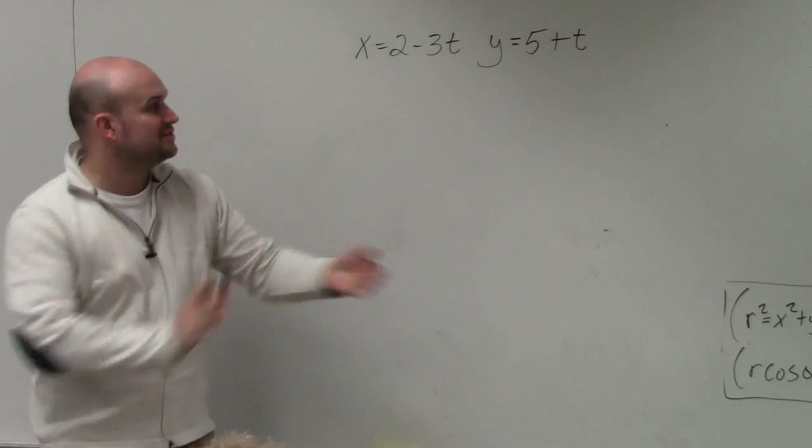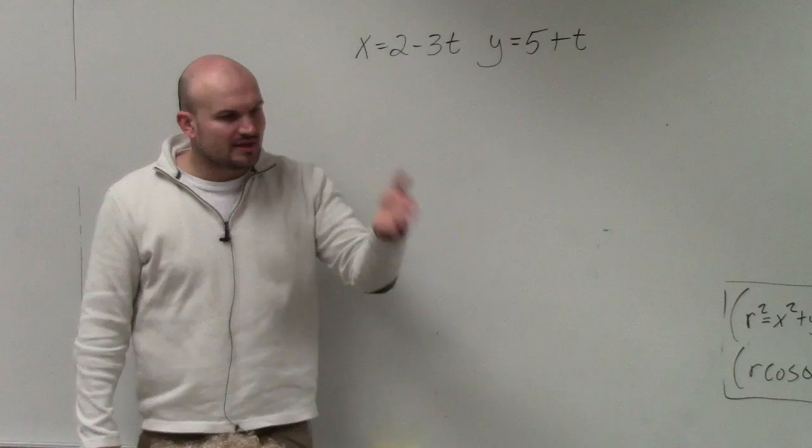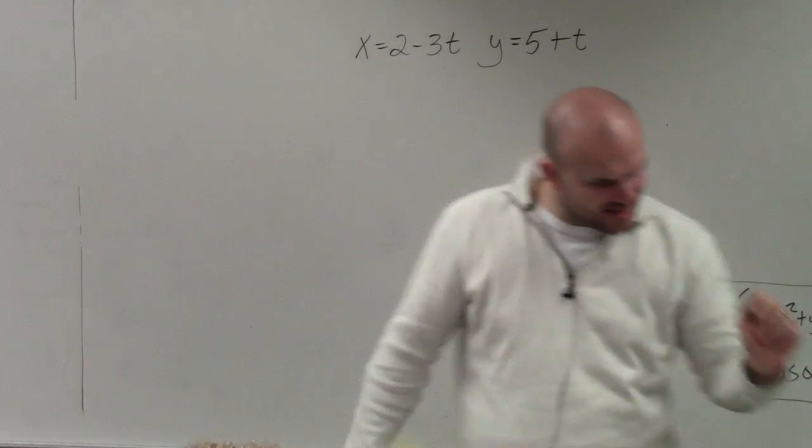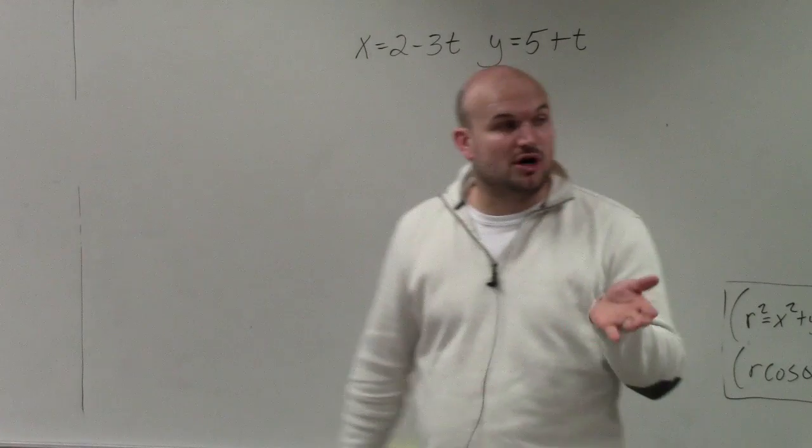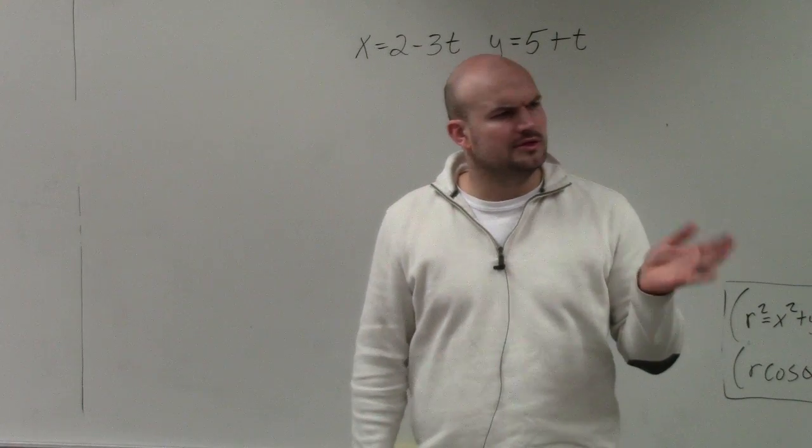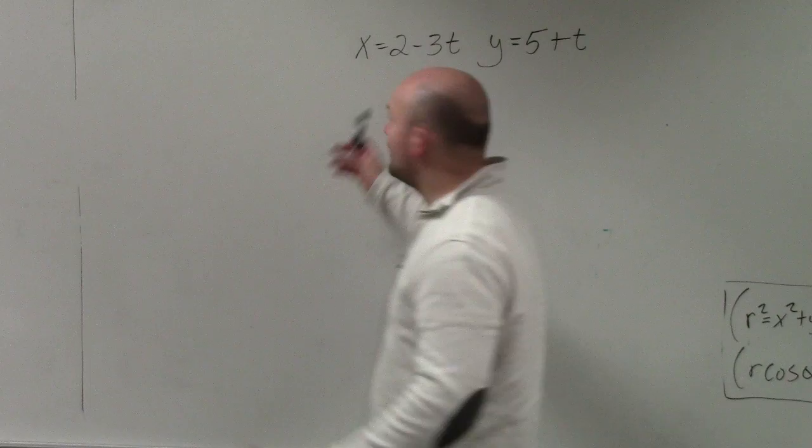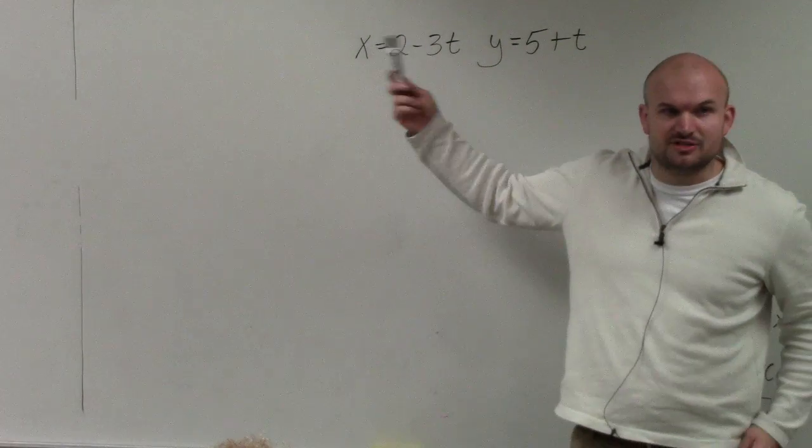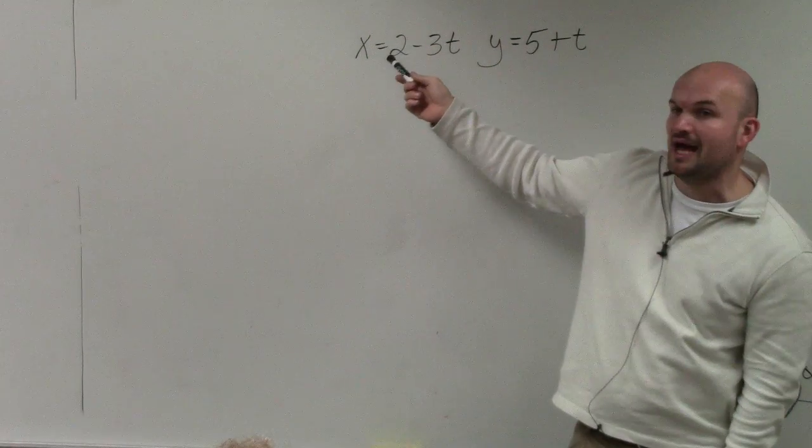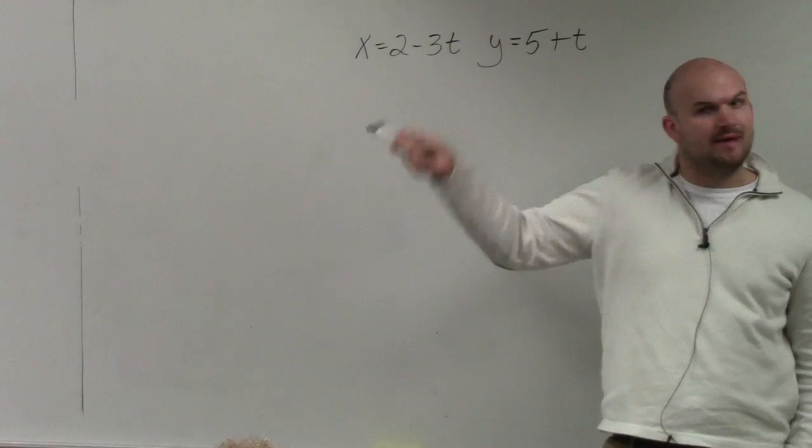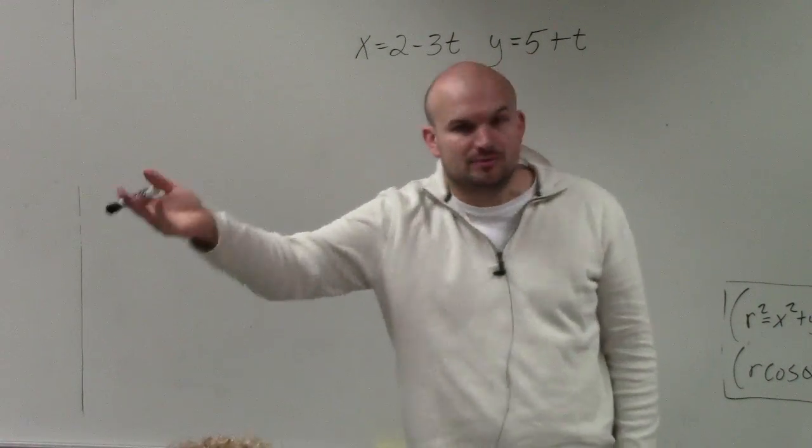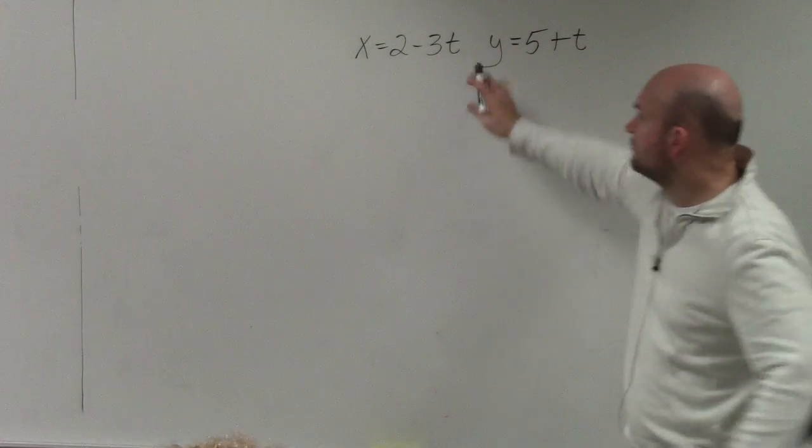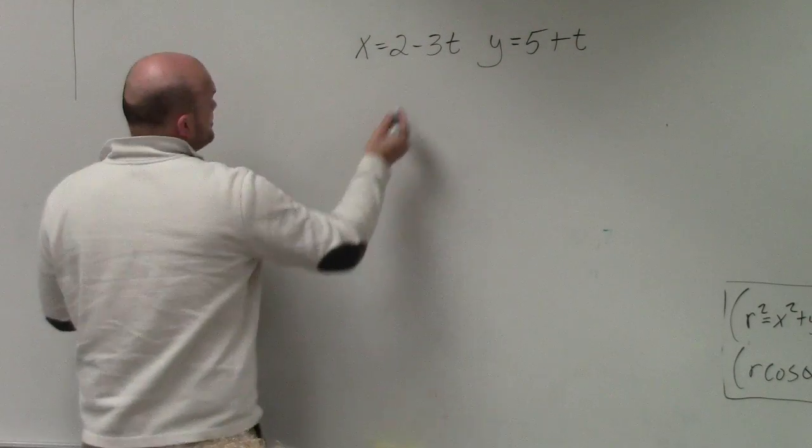So basically, the steps that you like to do is usually, unless it gave you the hint, which was on number 15 where they tell you to solve using the other equation, it's easiest to eliminate the parameter by solving for t in x, and then plugging it into the equation of y, because usually we have identified what the graph would look like with y equals. So first thing you're going to do is just solve for t.